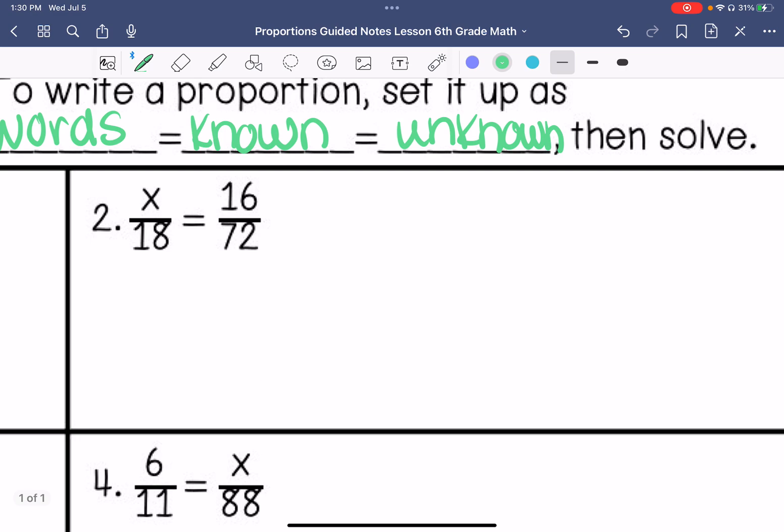Number 2, 18 times what number is 72? So 18 times 4, so if I were to go backwards, that would be 16 divided by 4. So x equals 4.